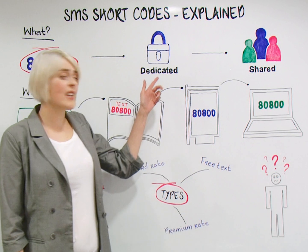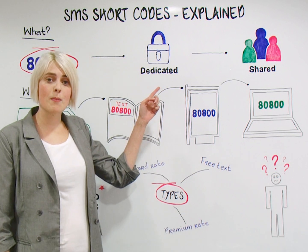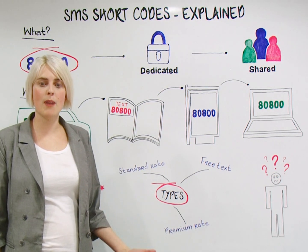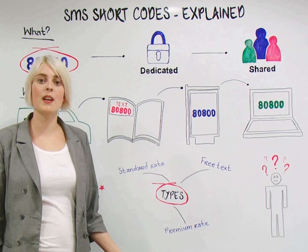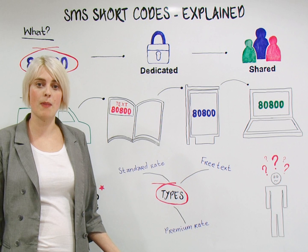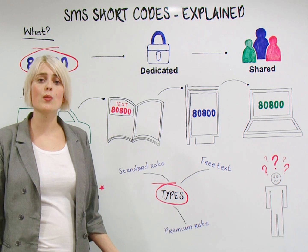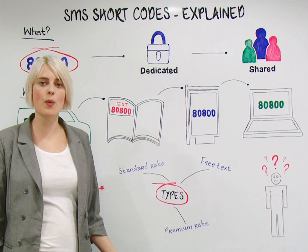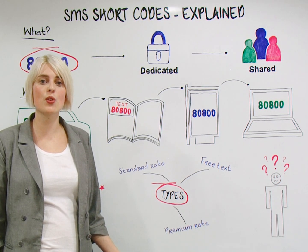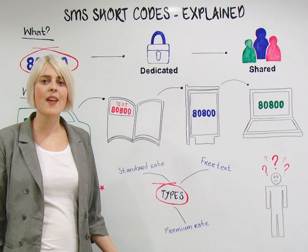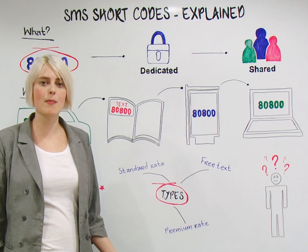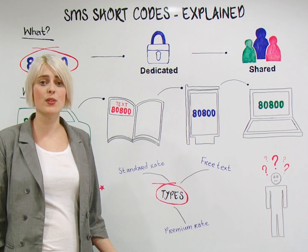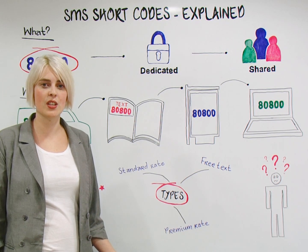You can purchase a dedicated number. This means that you own the number and will be the only company who uses the number. Alternatively, you can register a keyword on a shared shortcode. This tends to be the most cost-effective way for most organisations.